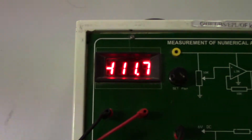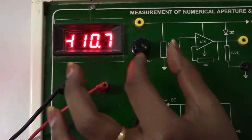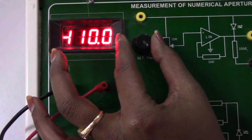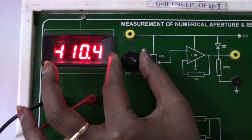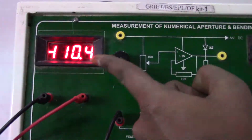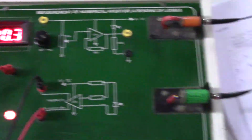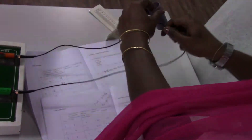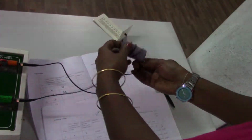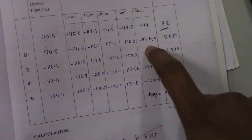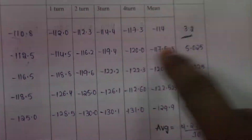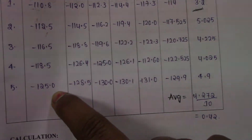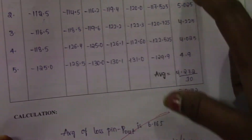Likewise, go for the second reading. Stretch the cable again and adjust the intensity knob. Earlier we took minus 105.5; now I will go with minus 110.5 — any value that gives some difference from the previous reading. For this new input power, follow the same procedure: use the mandrel and bend the cable for one turn, two turns, three turns, four turns, and so on. Write all readings in their respective places, calculate the mean, then compute Loss equals P_in minus P_out. You need to go with four to five different input powers and measure the output power each time, then calculate the loss.